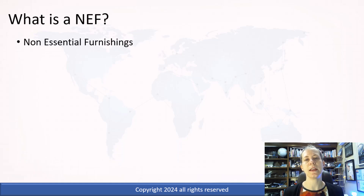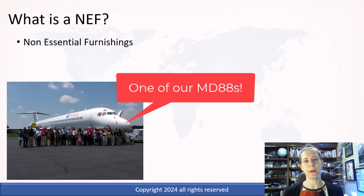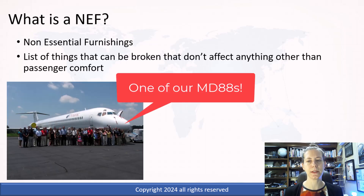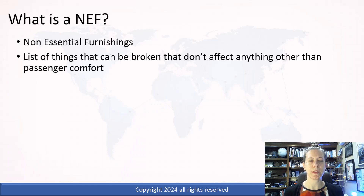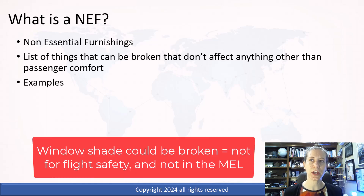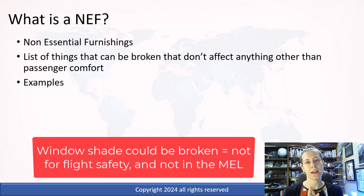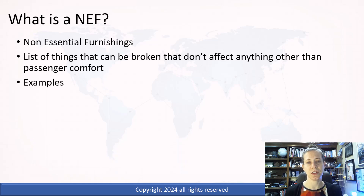The bonus topic is the non-essential furnishings list, or NEF. This is something I had at the company where I used to work — my old charter company with the MD-80s. We had a huge list of things that could be broken that don't affect anything besides passenger comfort or maybe branding of the aircraft. An example might be a window shade. If we had a window shade stuck in the up position, we could have this on the non-essential furnishings list because it really isn't an airworthiness item — it's not on the MEL, and it's not missing, so it's not on the CDL.